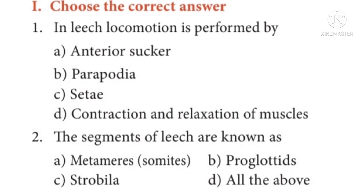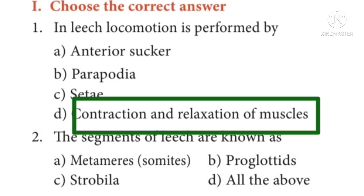Question 1: In leech, locomotion is performed by — Options: A. Anterior sucker, B. Parapodia, C. Setae, D. Contraction and relaxation of muscles. The correct answer is Option D: Contraction and relaxation of muscles.